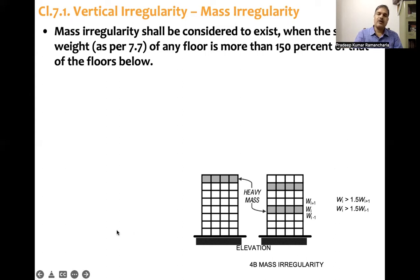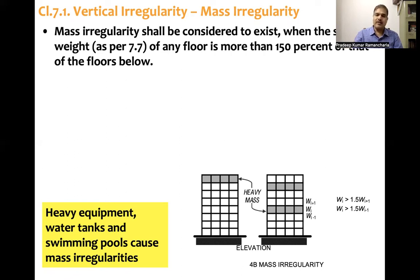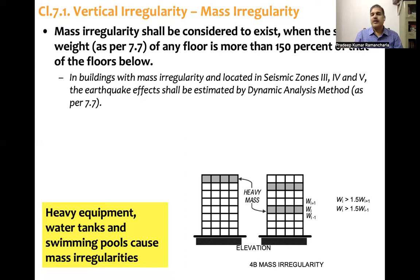Mass irregularity can occur when there is heavy equipment, a heavier water tank, or swimming pools placed in any floor. If mass irregularity is present and the building is located in seismic zone 3, zone 4, or zone 5, the earthquake effects shall be estimated by dynamic analysis method, as given in clause 7.7.